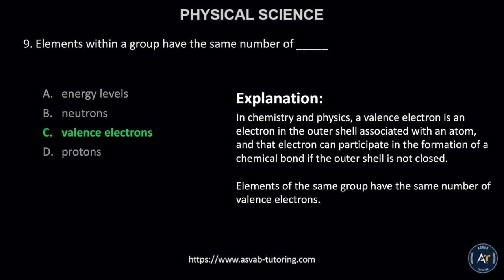This is because in chemistry and physics, a valence electron is an electron in the outer shell associated with an atom, and that electron can participate in the formation of a chemical bond if the outer shell is not closed. Elements of the same group have the same number of valence electrons.